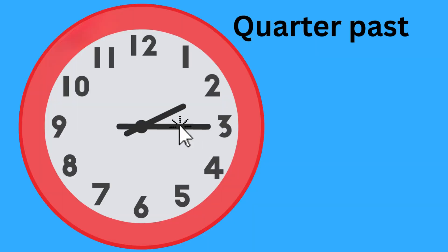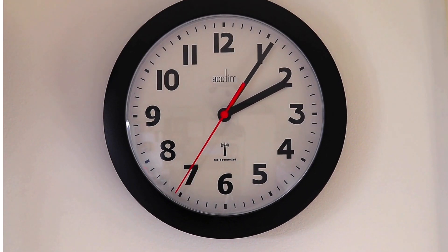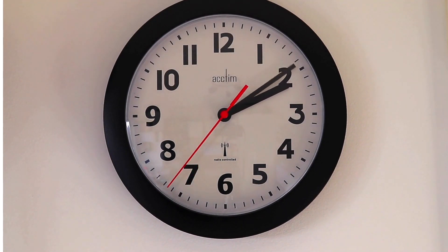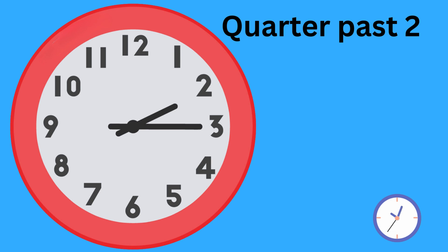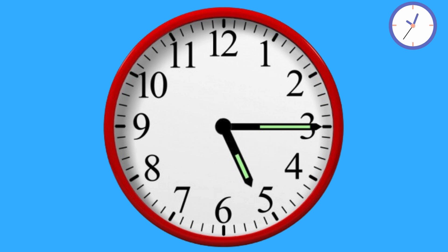Next, when the long hand is at three, we say it is quarter past. It means that a quarter of the hour has passed. So, the time on this clock is quarter past two. This is quarter past four. And this is quarter past five.